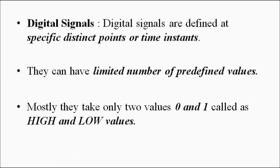Digital signals are different. They are defined at specific distinct points and do not exist at each and every point of time — they are defined for a certain duration. Another important characteristic is that the amplitude of a digital signal is fixed and can take only certain predefined values. Mostly in data communication, the two-value format is used: a high value and a low value — 0 and 1. Mostly 0 is taken as low and 1 as high; that is positive logic.